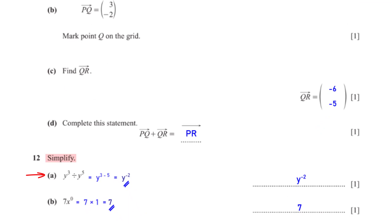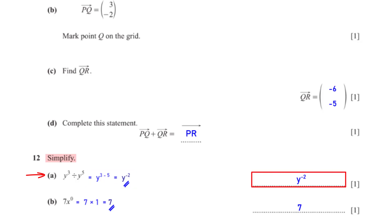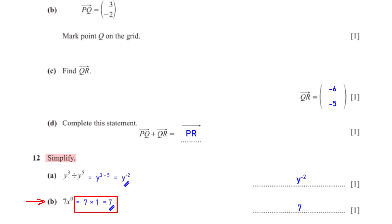Simplify y³ ÷ y⁵. Since the terms have the same base and they are dividing, we subtract the powers: y^(3−5) = y^(−2). Simplify 7x⁰. Since x⁰ = 1, we have 7 × 1 = 7.